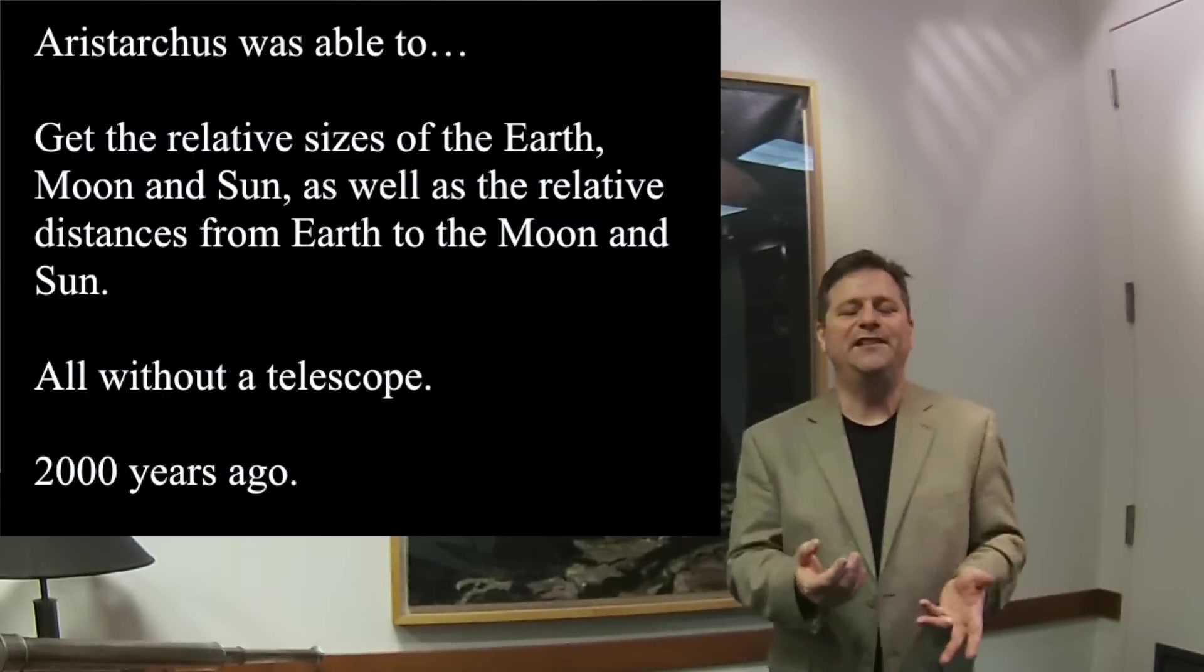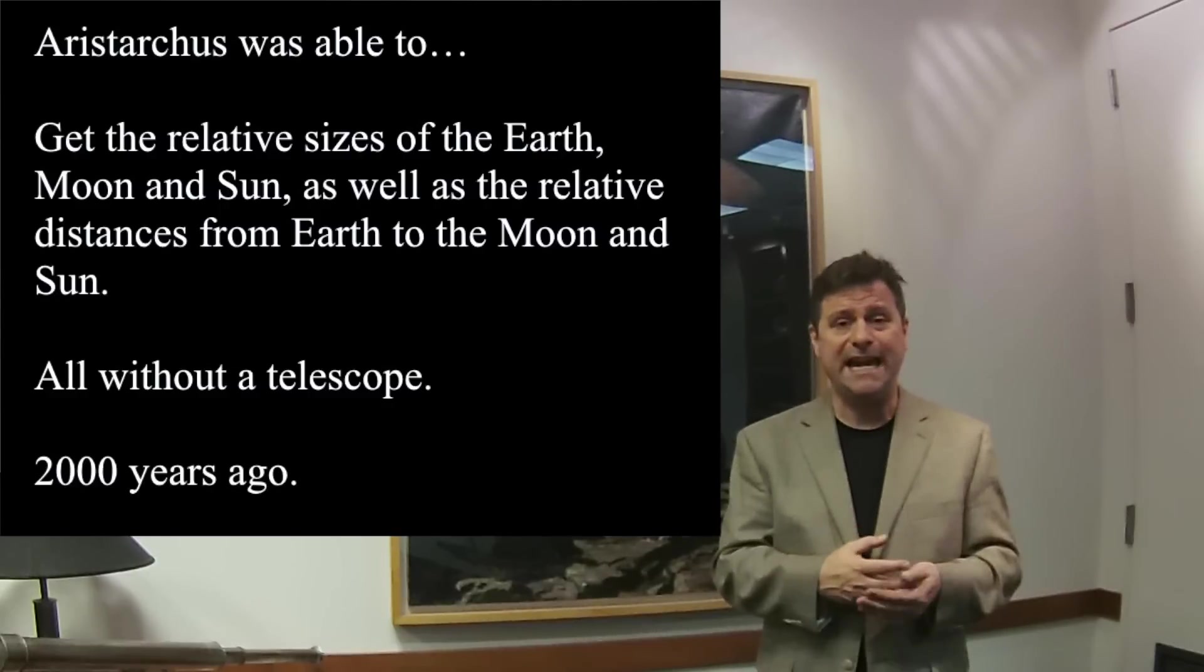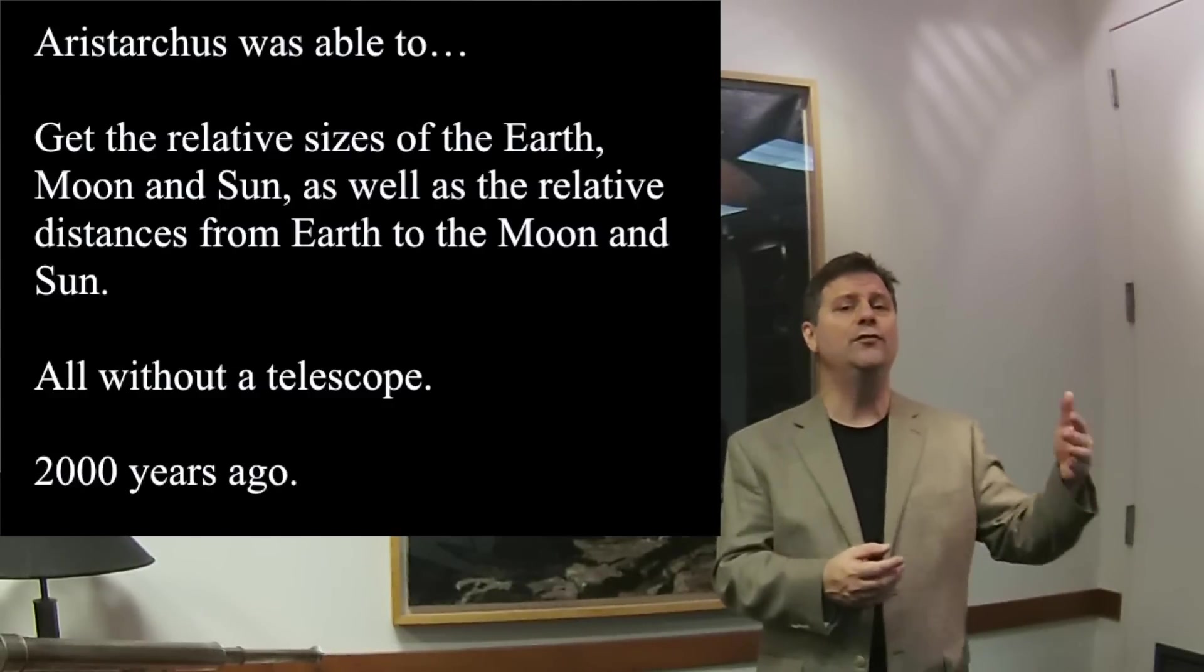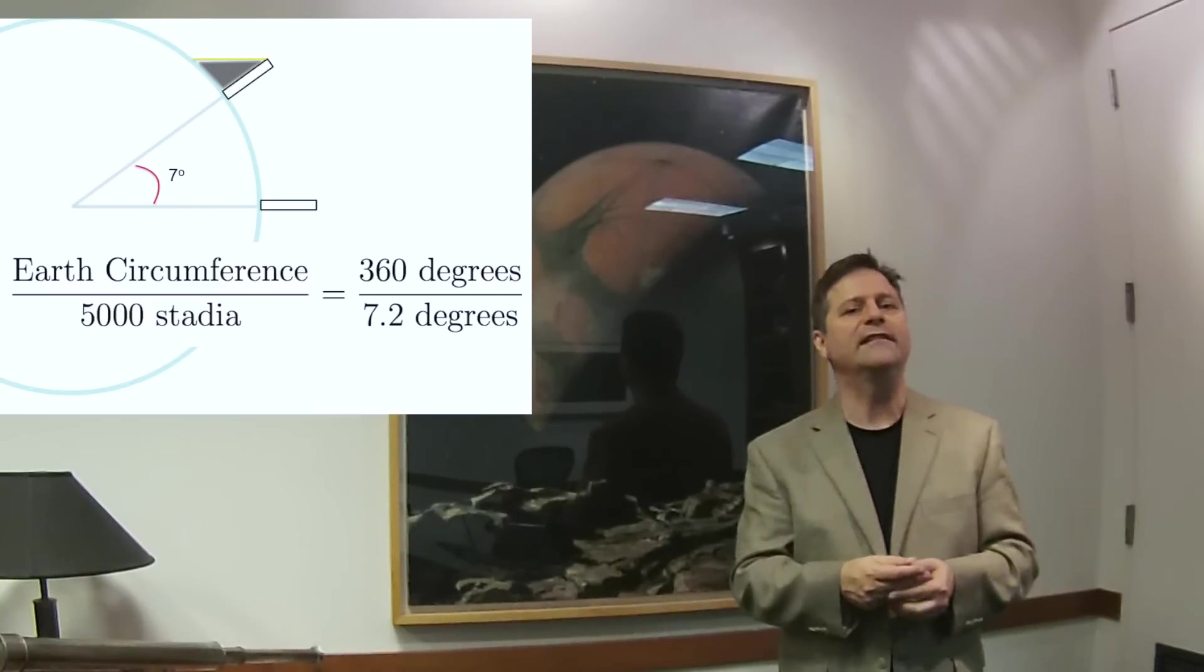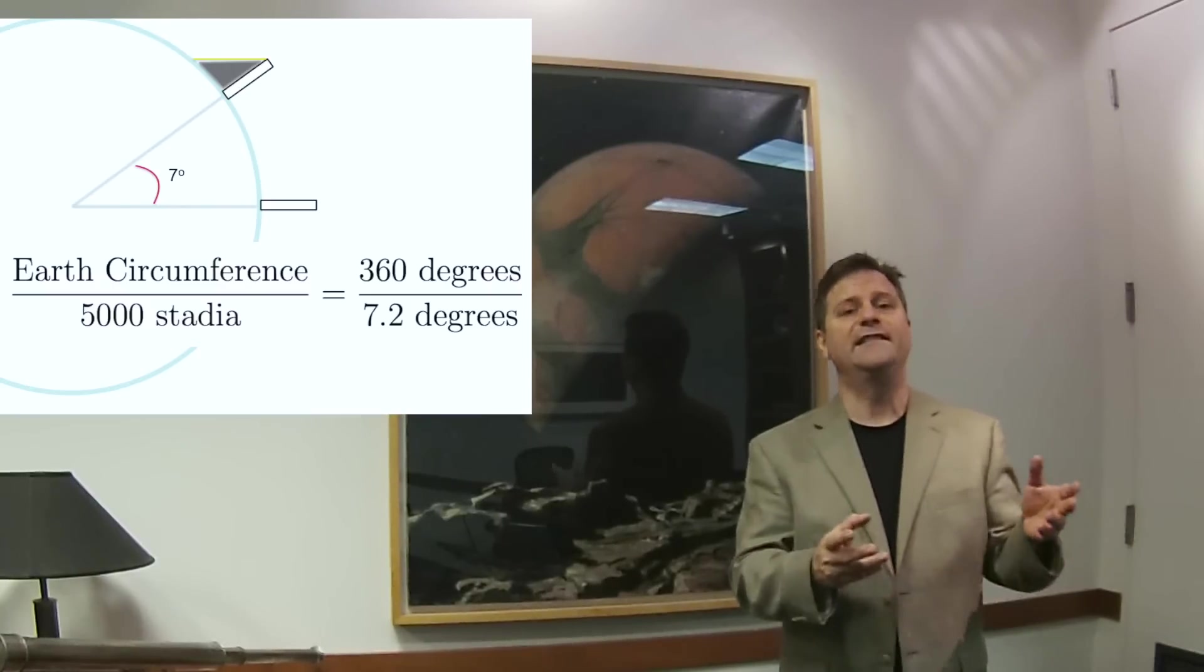So how did he do this? He did this all by eye and by hand. Remember his contemporary actually knew the size of the earth. So we can actually use that and plug that in later in order to get the actual sizes of the sun and the moon, according to Aristarchus.